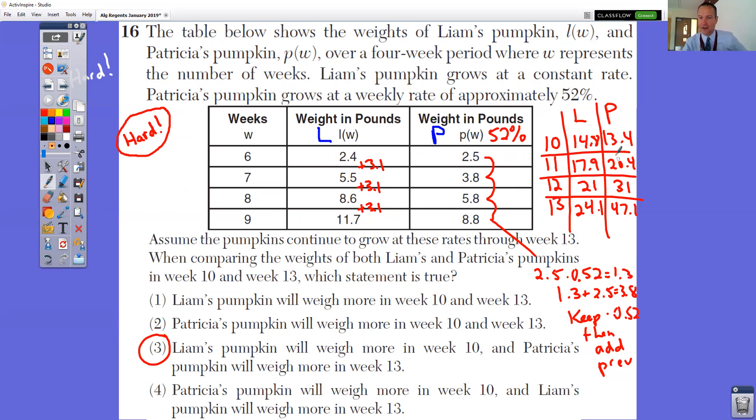That's where we get that next number and keep on going from there. So if you actually went and figured out the total values by adding those specific amounts, it says assume the pumpkins continue to grow at those same rates. They want to know when comparing the weights of Liam and Patricia's pumpkin in week 10 and 13, which statement is true. So notice that our chart stops at week 9. We have to continue on adding 3.1 to Liam's each time, adding 52% to Patty's each time.